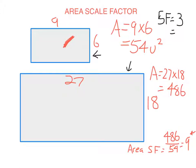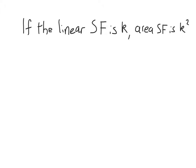So what's going on here? This is the principle: if the linear scale factor is k, the area scale factor is k squared. In our previous examples, when the linear scale factor was 2, the area increased by 2 squared — 4 times. When I multiplied the length of each side by 3, the area was multiplied by 3 squared, which is 9. So if you multiply the length of each side of a rectangle by k, the area will be multiplied by k squared.